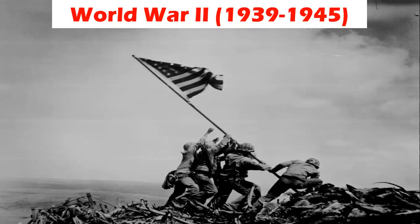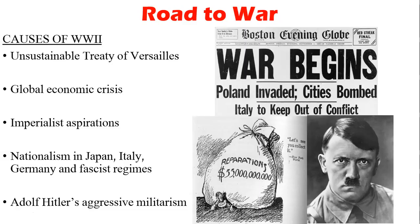Now we go into World War II, 1939 to 1945. The reasons include: the Treaty of Versailles was unsustainable; there was a global economic crisis; imperialist aspirations; nationalism in Japan, Italy, and Germany and their fascist regimes; and Adolf Hitler's aggressive militarism. He didn't come to power immediately saying 'let's kill everyone' — he came to power because many Germans had no jobs due to the global depression. He said he'd get them jobs and fix everything. He came to power and was able to get Germans jobs by taking them away from Jews, the Roma, and other groups he managed to get rid of. So he gained power and then started his aggressive militarism.